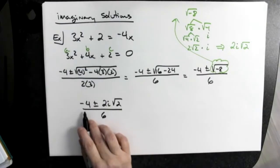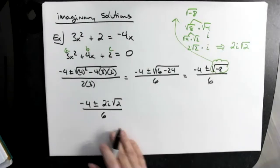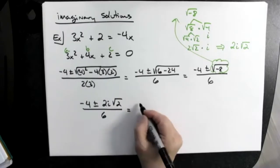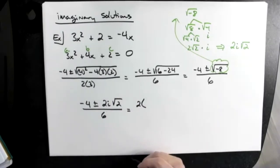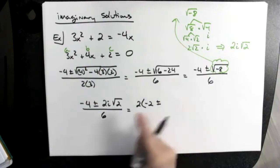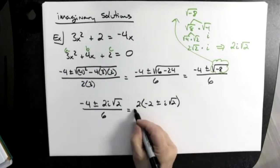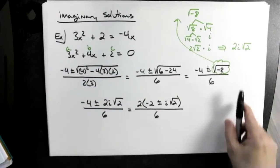Now I would not factor out a negative, because it's going to be easier to just take out that positive 2 and let the 2 and the 6 cross out. So I would probably just factor out a 2. That's going to leave me with a negative 2 plus or minus i square root of 2, and we'll get the 6 down here. 2 goes into 2 one time, 2 goes into 6 three times.